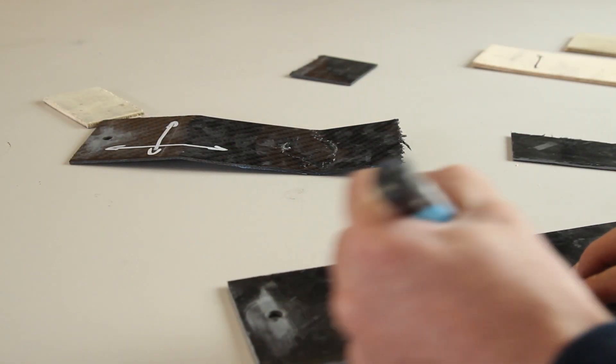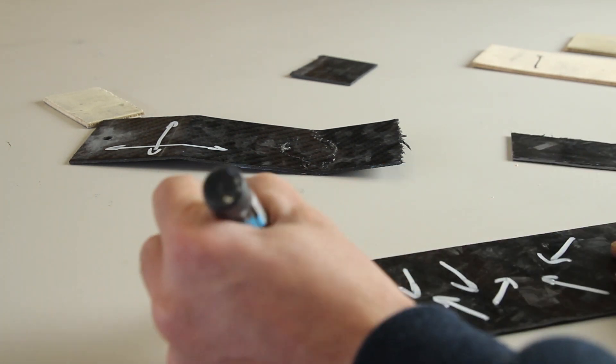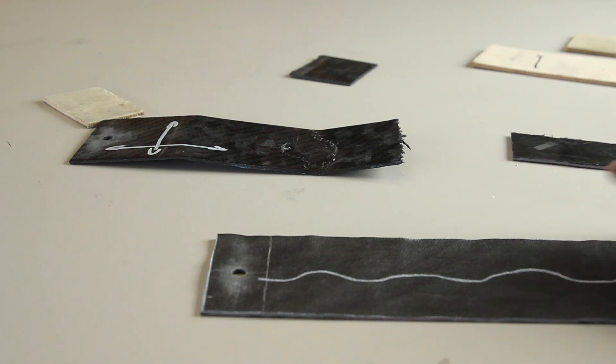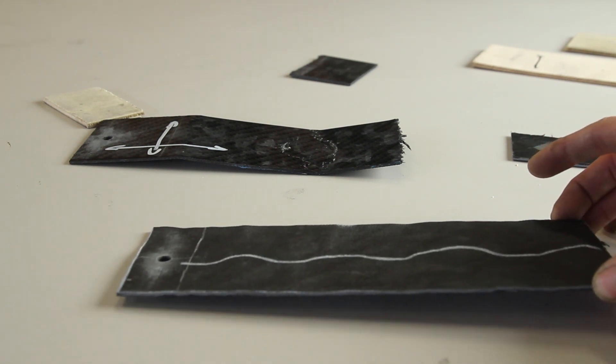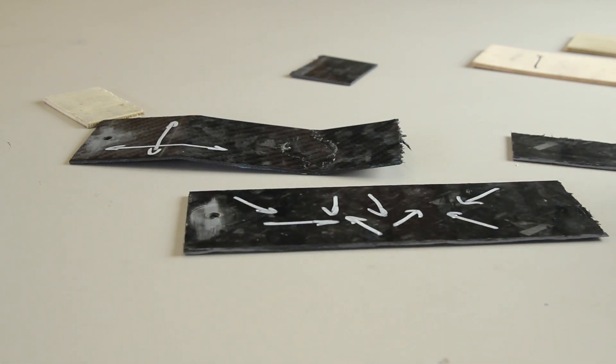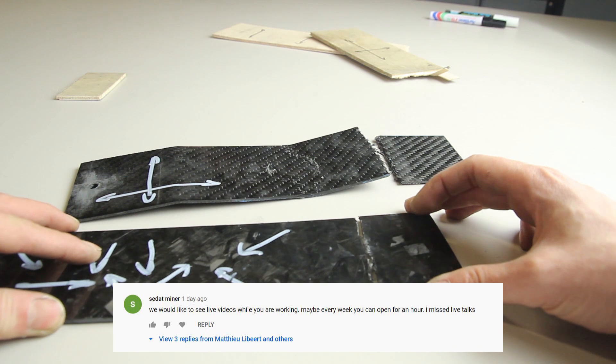Then you have the chop strands and the veil - the 300 gram veil that is orientated in multiple directions. You will get strength in multiple directions. Also notice that there is a wavy finish that will cause some problems or change the results. I got another question.